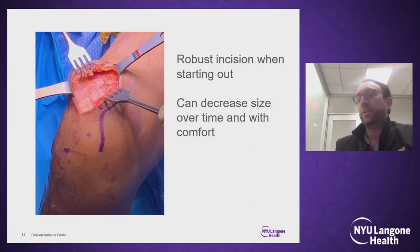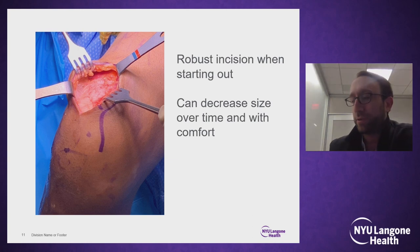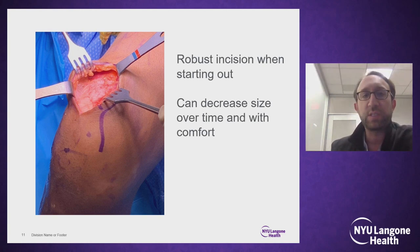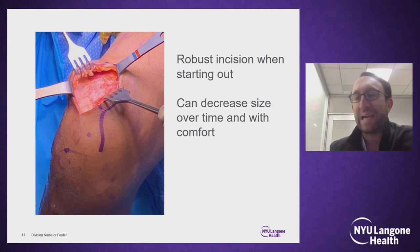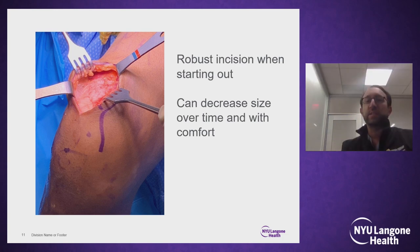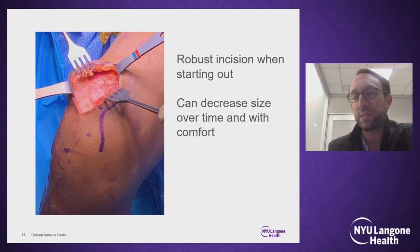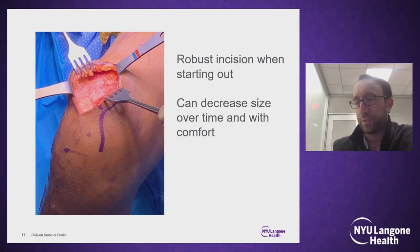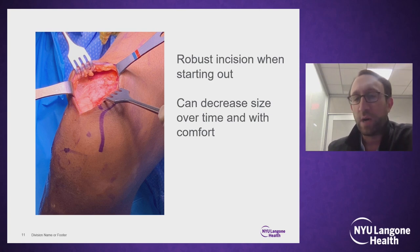If you're first starting out with quadriceps tendon, I recommend making a lengthier incision so you can see everything. You'll want to see the strip of the rectus femoris as it comes proximally and dives between the vastus lateralis and vastus medialis. Don't be afraid to go as proximal as possible with both the incision and the harvest site off the rectus.